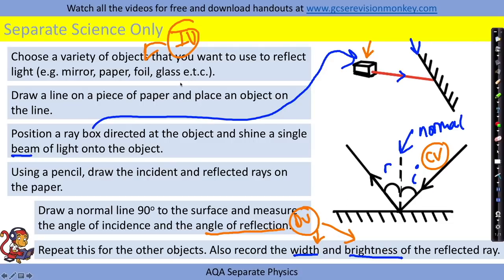In the exam they may well also ask you to actually keep the object the same and instead change the angle of incidence and measure different angles of reflection. So they might manipulate this practical slightly and ask you to investigate something slightly different but that's the basic setup that you need to follow.